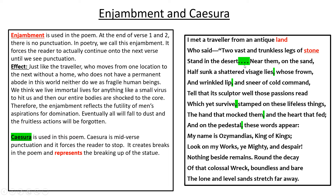Caesura forces you to stop. It forces you to stop and creates breaks in the poem — representing, for example in Ozymandias, the breaking up of the statue. Caesura forces you to stop, and think, and reflect, and actually take in why something is happening.